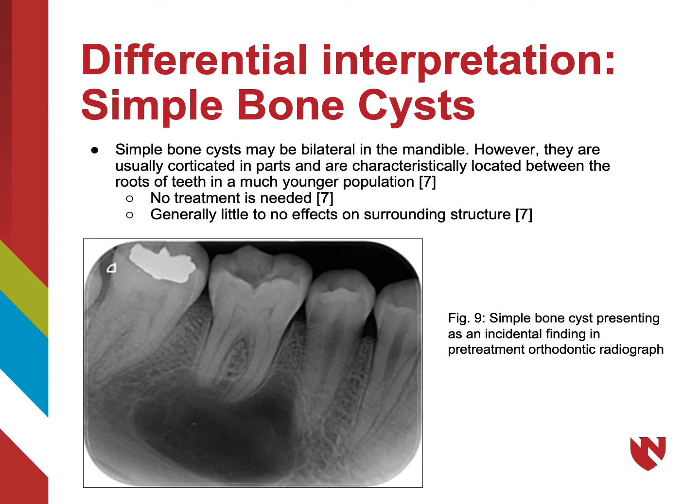Simple bone cysts can be located bilaterally in the mandible. However, they are usually corticated in spots and located between roots of teeth in a much younger person. Simple bone cysts do not require any treatment and generally have little to no effect on surrounding structures.